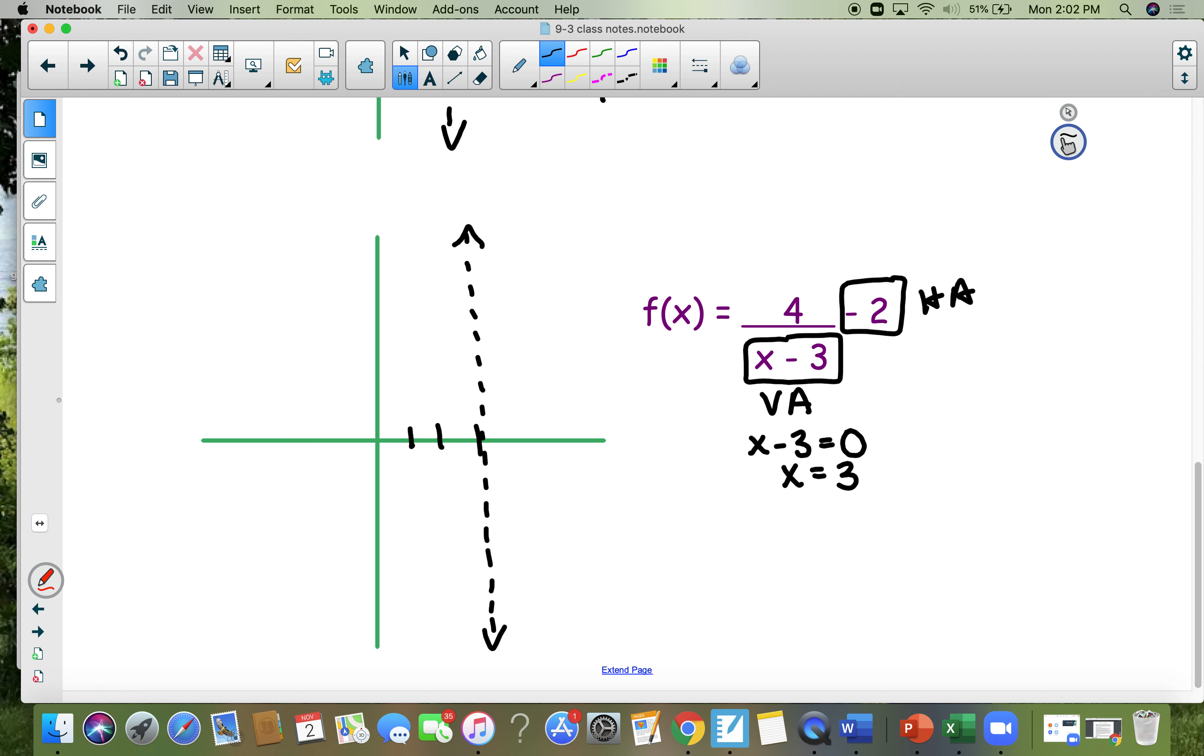The horizontal asymptote, you don't have to do anything. It's at negative 2. So at the negative 2, make a horizontal dotted line. Okay, the next thing you're going to do is the 4 is a positive value. So you're in these two quadrants.